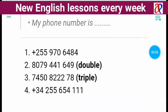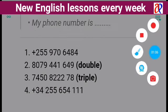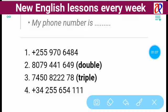Now let's look at some examples of phone numbers. When you want to say a phone number, you say each number individually — in other words, you say each digit individually. Let's see the first example.